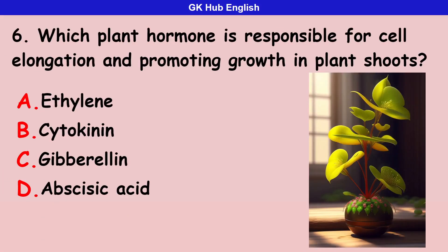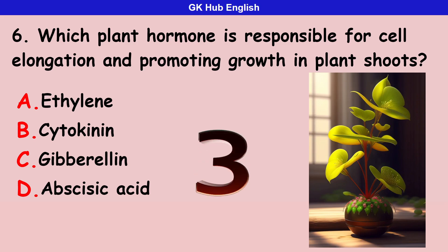Sixth question: which plant hormone is responsible for cell elongation and promoting growth in plant shoots? Option A is ethylene. Option B is cytokinin. Option C is gibberellin. Option D is abscisic acid. Correct answer is gibberellin.